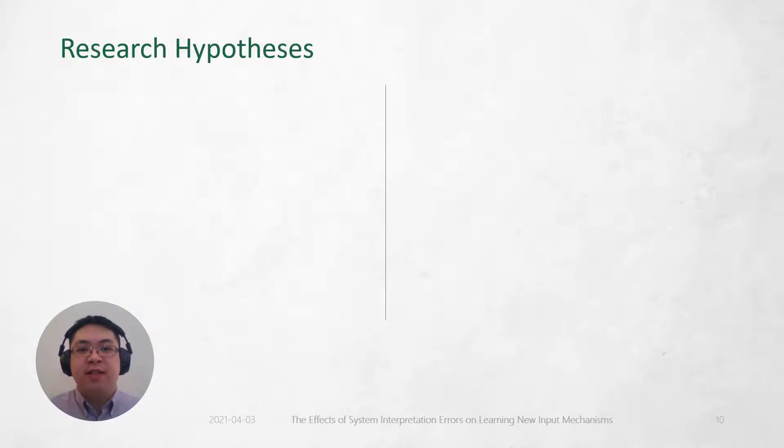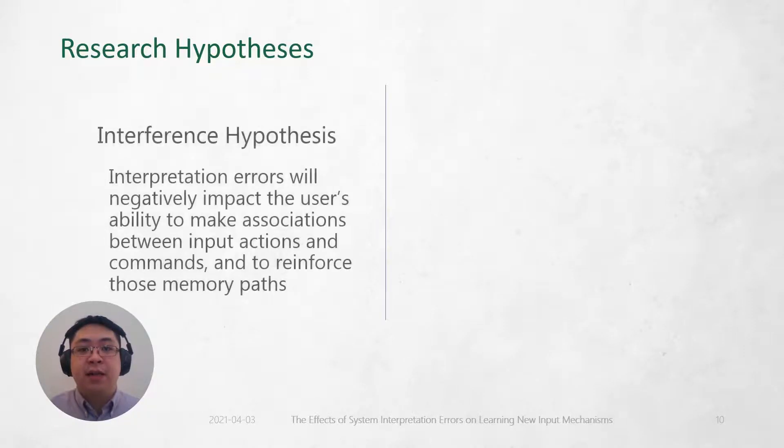We form two hypotheses about how interpretation errors would affect learning. The first is the interference hypothesis. It suggests that interpretation errors will interfere with the user's development and reinforcement of memory pathways leading to a longer learning curve.